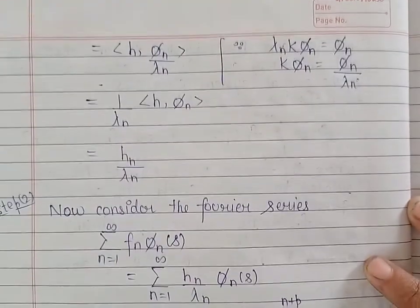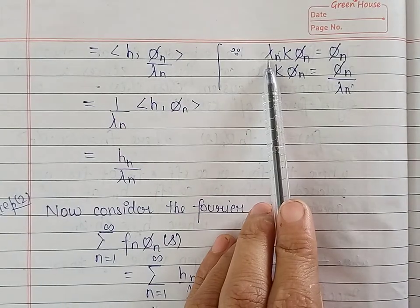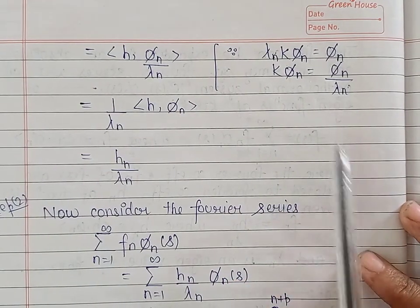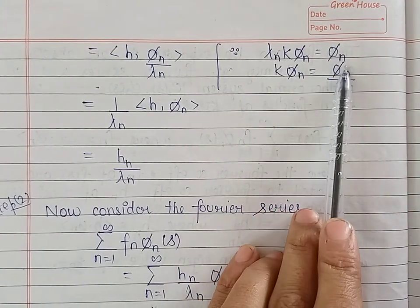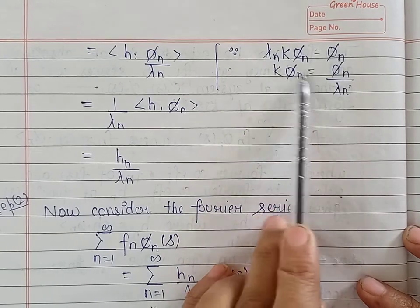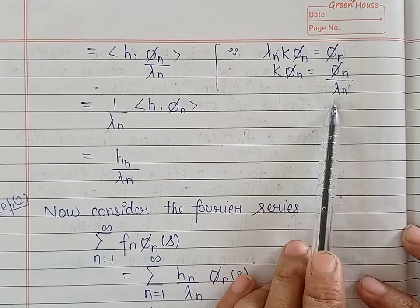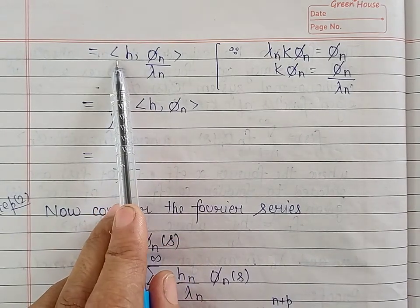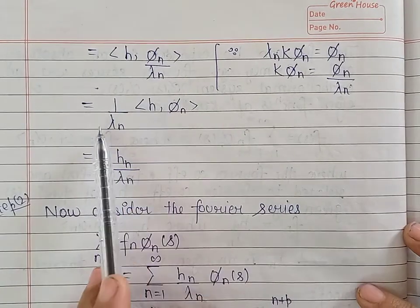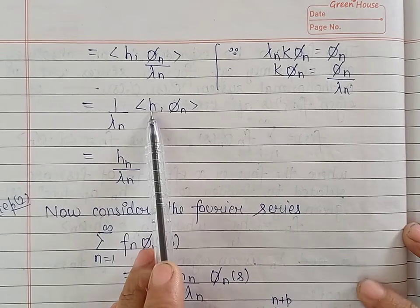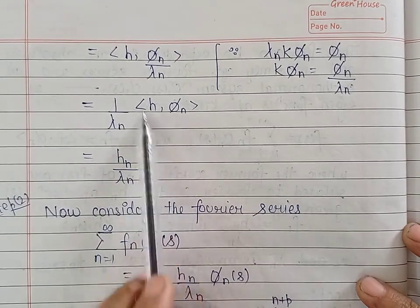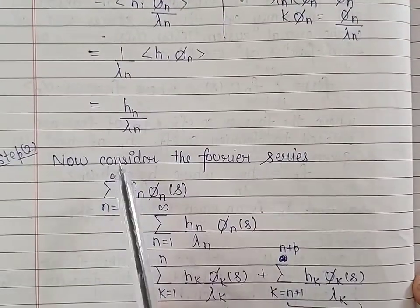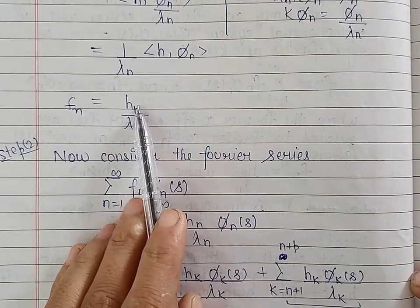So fₙ = ⟨h, Kφₙ⟩. Now substituting the value of Kφₙ: since λₙ are the eigenvalues and φₙ are the corresponding eigenfunctions for the symmetric kernel, the symmetric integral equation gives λₙ · Kφₙ = φₙ, so Kφₙ = φₙ / λₙ. Substituting, fₙ = ⟨h, φₙ / λₙ⟩. Since 1/λₙ is a scalar, it comes outside, giving fₙ = (1/λₙ) ⟨h, φₙ⟩ = hₙ / λₙ. This proves the first step.